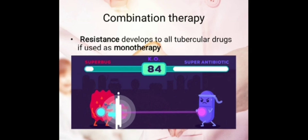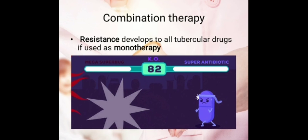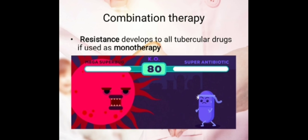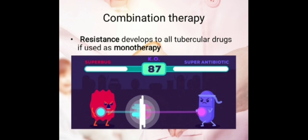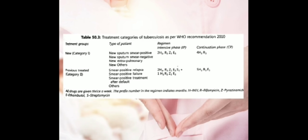Now, a little about combination therapy. We don't give any single particular drug as a defense against TB. With monotherapy, TB may develop resistance, so we have to give therapy for a prolonged time. Instead, we use combination therapy. This is the protocol for combination therapy according to WHO: H represents Isoniazid, R represents Rifampicin, Z represents Pyrazinamide, E represents Ethambutol, and S represents Streptomycin. You have to learn how this regimen is structured.